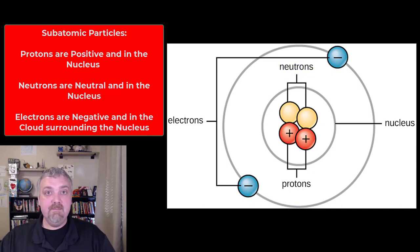So remember, P for P, protons positive. N for N, neutrons are neutral, meaning they don't have a charge. And then electrons are the negatively charged subatomic particles.